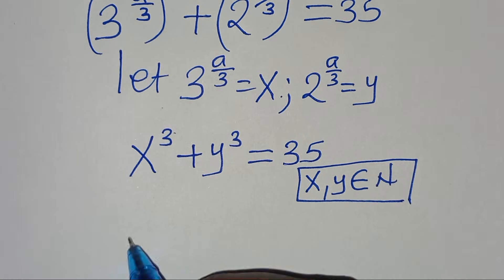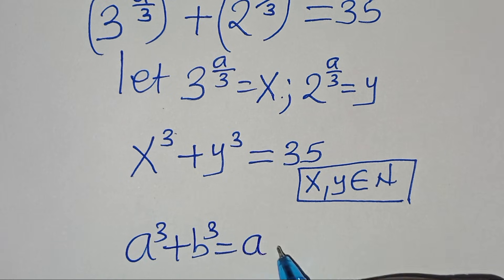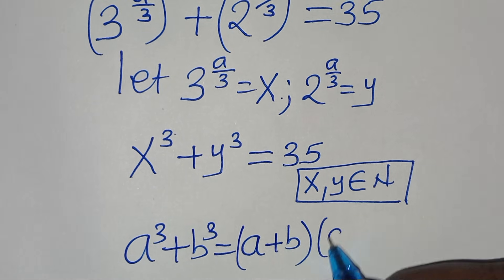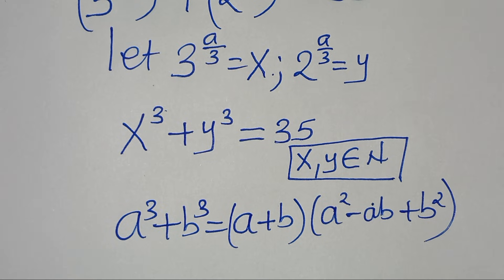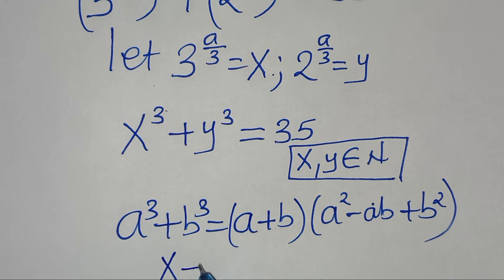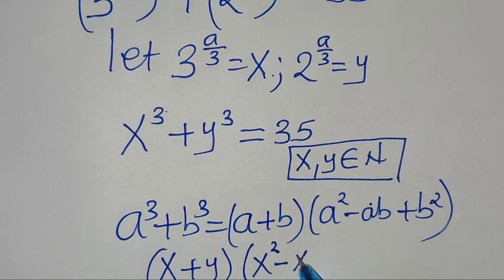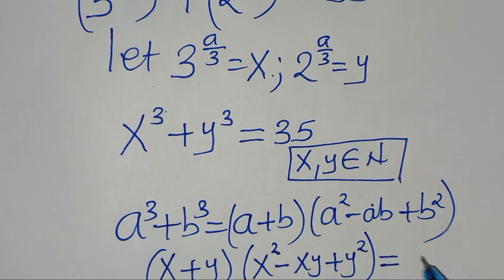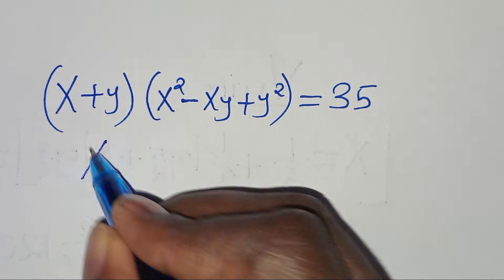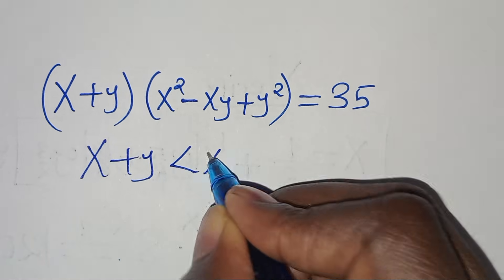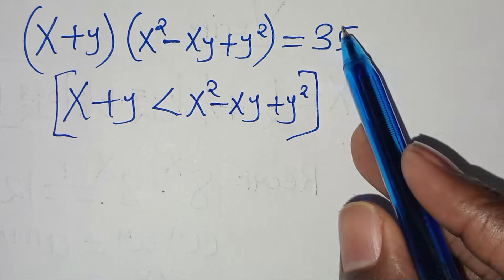x³ + y³ is in the form a³ + b³, which we can express using the sum of cubes identity as (a + b)(a² - ab + b²). Applying this identity, we have (x + y)(x² - xy + y²) = 35. The next part is to get the prime factor pairs of 35.